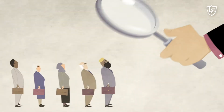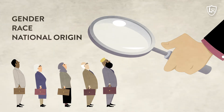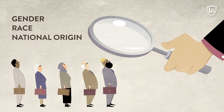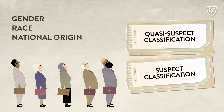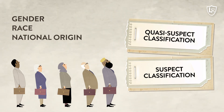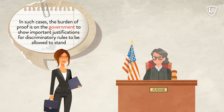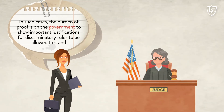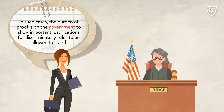Other categories of discrimination, such as those based on gender, race, or national origin, are considered quasi-suspect or suspect classifications and are subjected to much higher levels of scrutiny by courts. In such cases, the burden of proof is on the government to show important justifications for discriminatory rules to be allowed to stand.